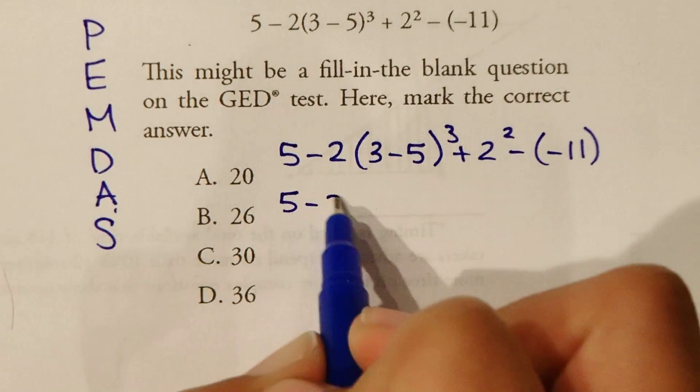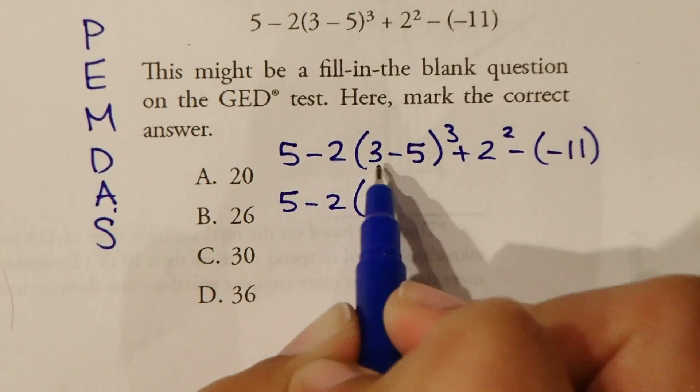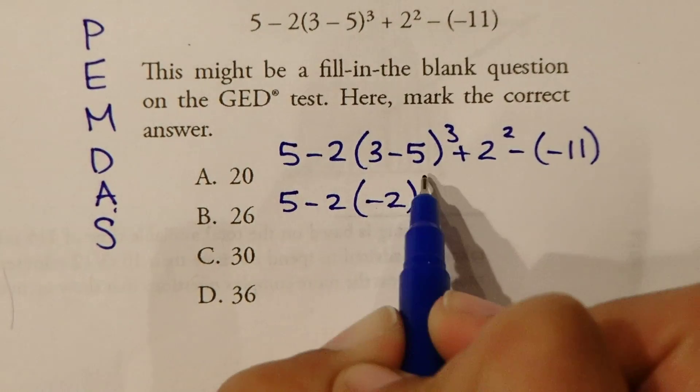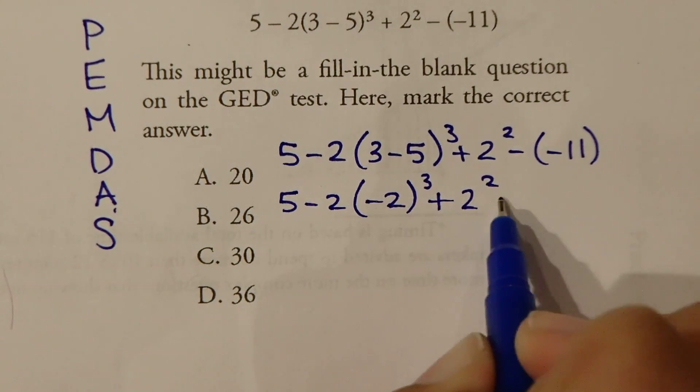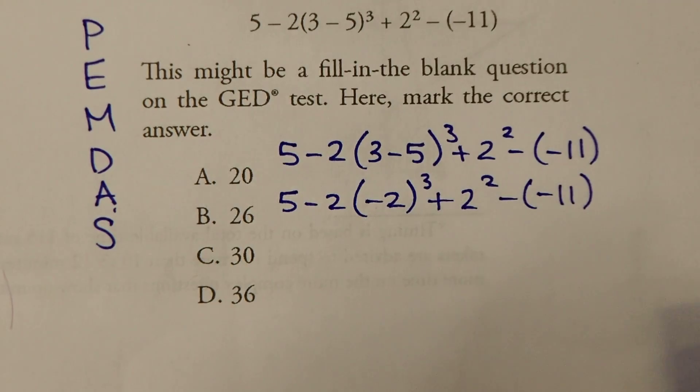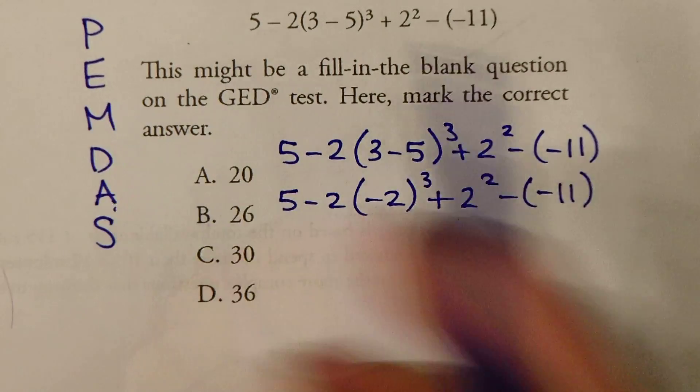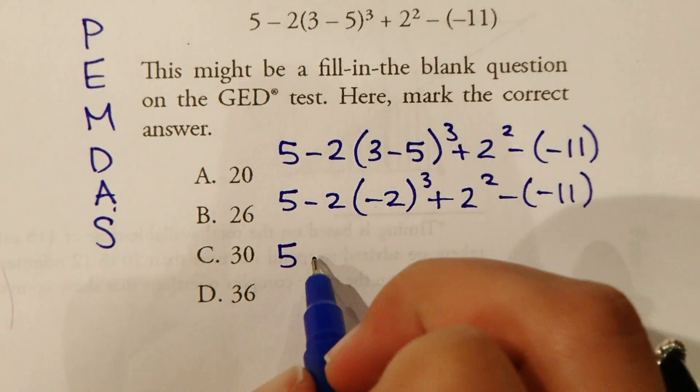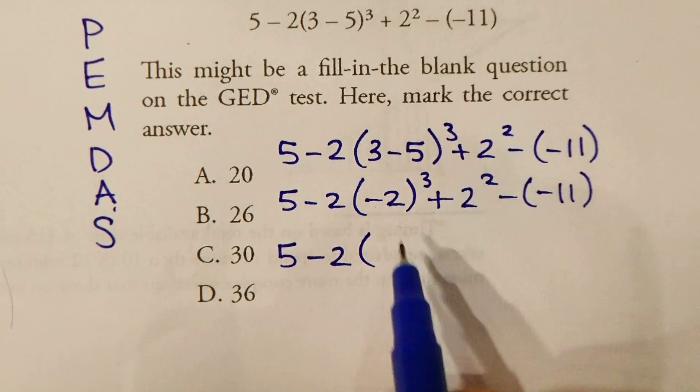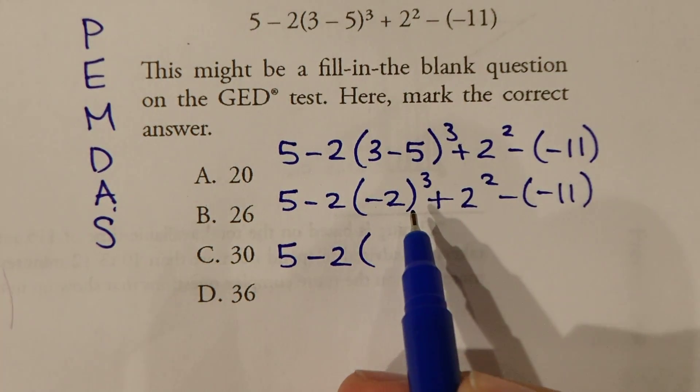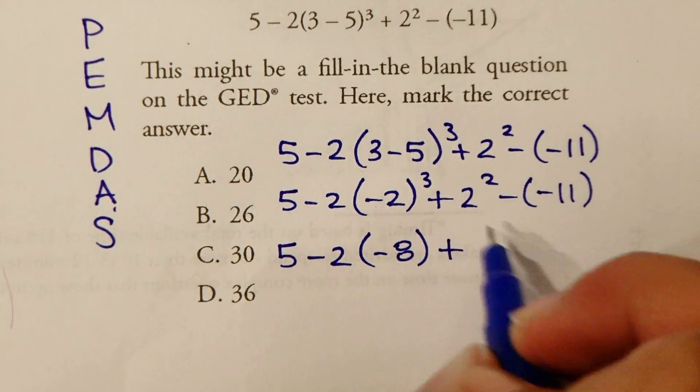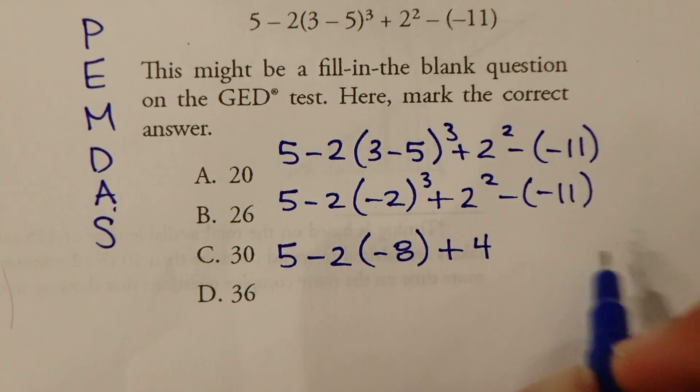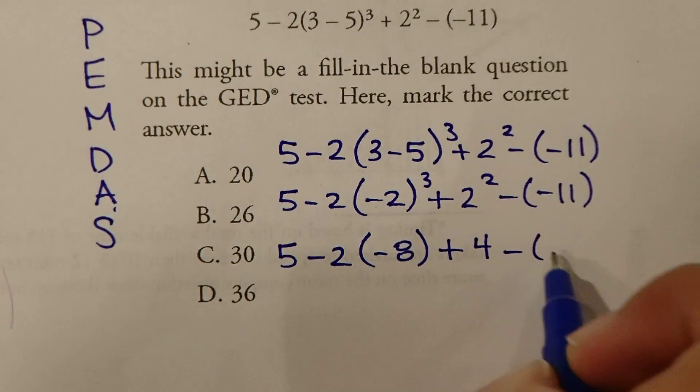So let's solve the parentheses first. So we'll have 5 minus 2 times, this is going to be 3 minus 5 is negative 2 to the third power plus 2 squared minus negative 11. The next thing is E, exponents. So we're going to say 5 minus 2 times negative 2 to the third power. You can put this in your calculator, but that's going to equal negative 8 plus 2 squared is 4 minus negative 11.